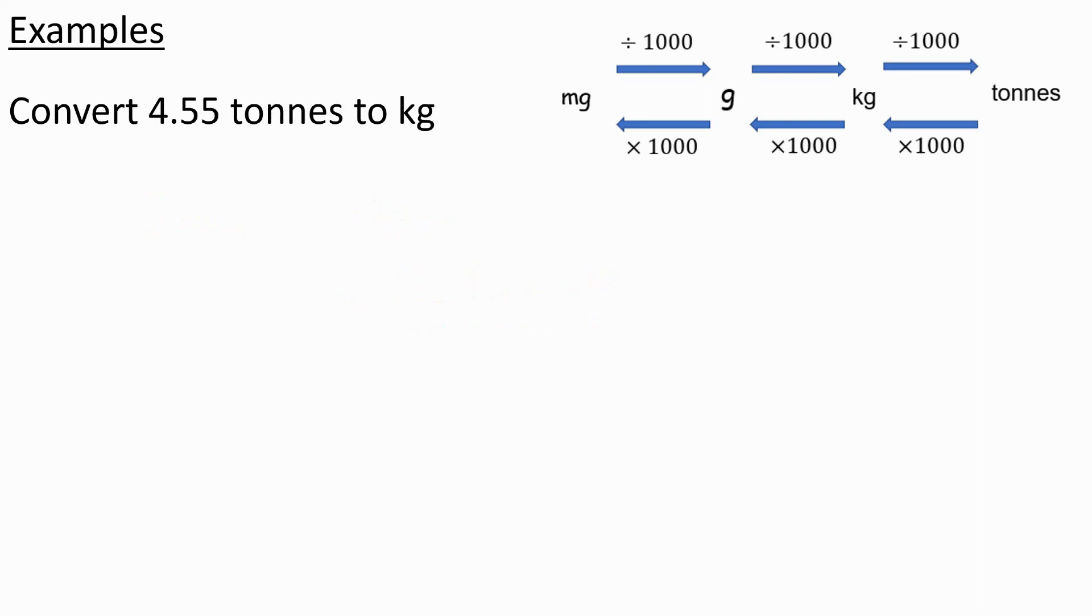On the other hand, if you wanted to change tons to kilograms, you would need to multiply by a thousand. So you'd have to do 4.55 times a thousand, which is 4,550 kilograms.